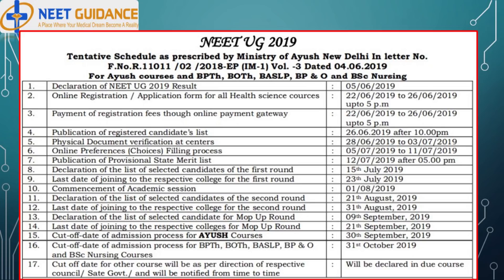Declaration of selected candidates list for second round: 21st August 2019. Last date of joining for second round: 31st August 2019. Declaration of selected candidates for mop-up round: 9th September 2019. Last date of joining for mop-up round: 21st September 2019. Cut-off date of admission process for Ayush courses: 30th September 2019. Cut-off date for BPTH, BOTH, BASLP, BP&O, and BSC nursing courses: 31st October 2019. Cut-off date for other courses will be as per directions of respective councils and state government, to be notified in due course.